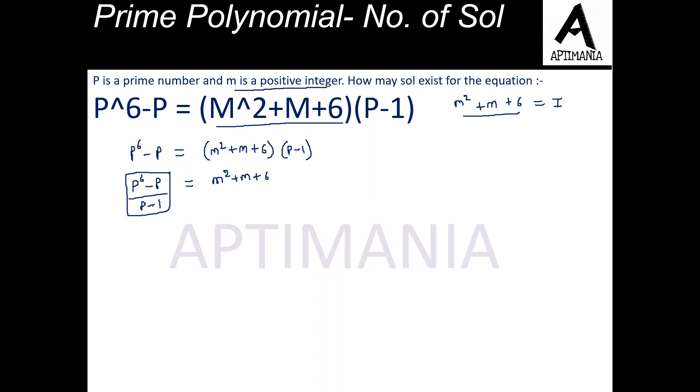Here is a perfect divide. So when we divide P^6 - P by P - 1 using long division method, we will get P^5 + P^4 + P^3 + P^2 + P. And this must be equal to M² + M + 6.